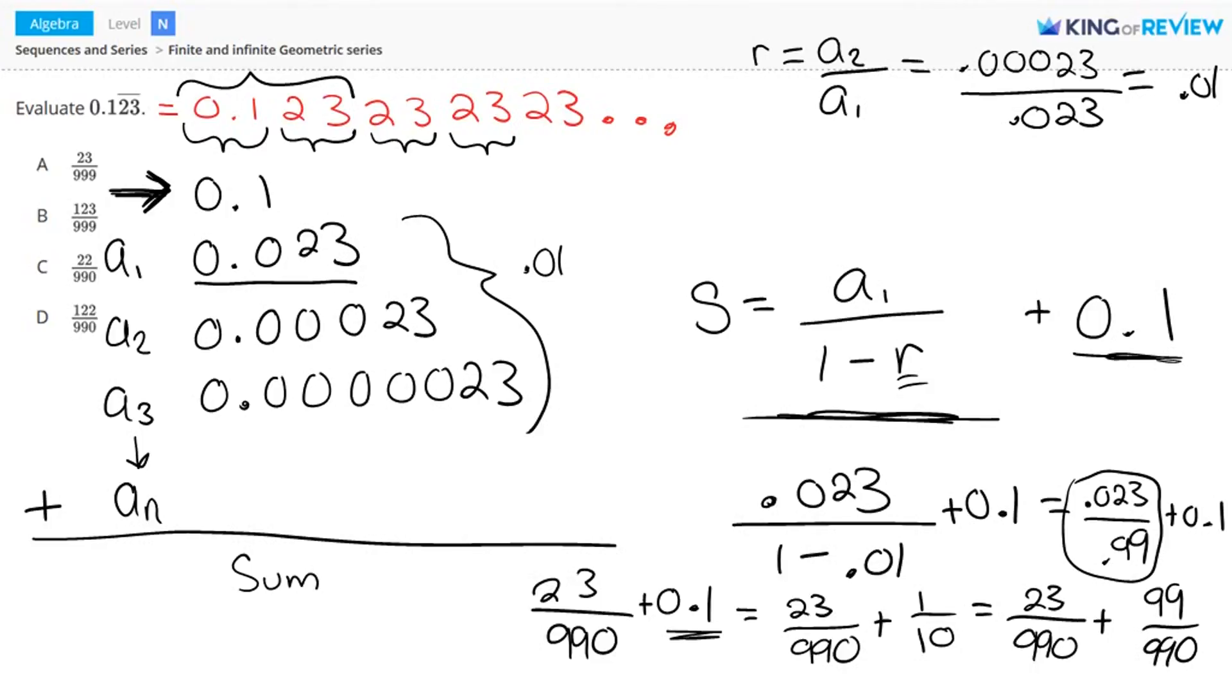And when you combine these, you get 122 divided by 990. So this number here represents the sum of all of these terms. So letter D is correct.